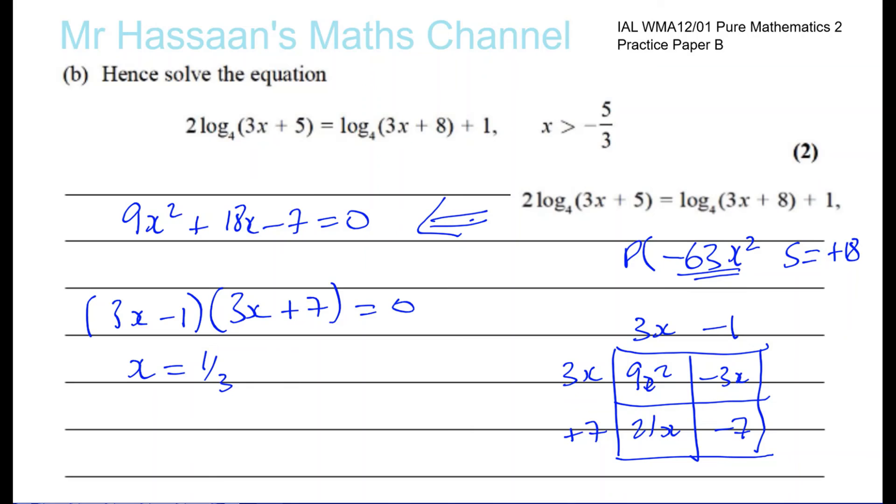Yes, everything works out. So you have 3x minus 1 times 3x plus 7 equals 0. So x is equal to 1 third. And x is equal to minus 7 over 3. Okay, so we know that x has to be greater than minus 5 over 3. They helped us out here because they didn't have to tell us that. And we would have to, sometimes you have to check your answers. And if you put minus 7 over 3 in here, this is going to be negative. You're going to have minus 7 plus 5, which is negative. So this is not one of the solutions. So therefore, x equals 1 third is the only solution.